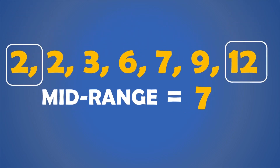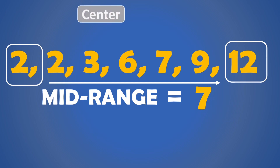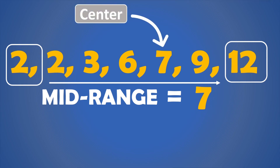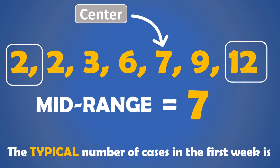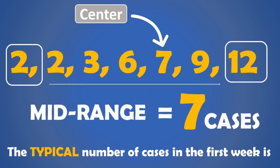What does a mid-range of 7 mean? The mid-range provides a quick estimate of the data set center or the typical value, and its interpretation is relatively straightforward. This simply means that the mid value of our data, ranging from 2 to 12 cases, is 7. In the case of our data, we can say the typical number of cases in the first week of January was 7 cases.